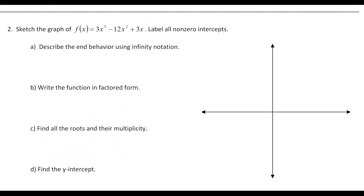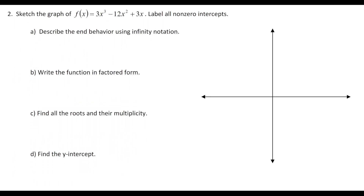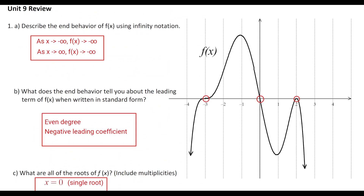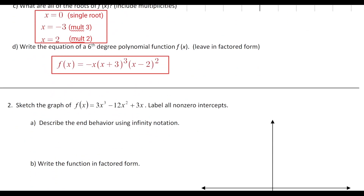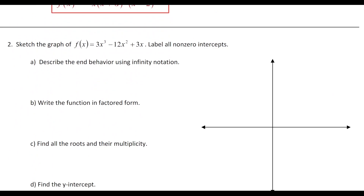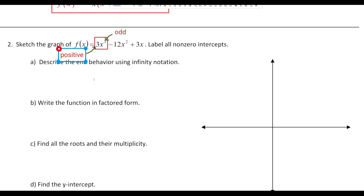Number 2 asks us to sketch the graph of a function and label all non-zero intercepts. Before sketching, I'll answer questions about end behavior and other features. The leading term is 3x³. Since the degree is odd and the leading coefficient is positive, the end behavior goes down to the left and up to the right.